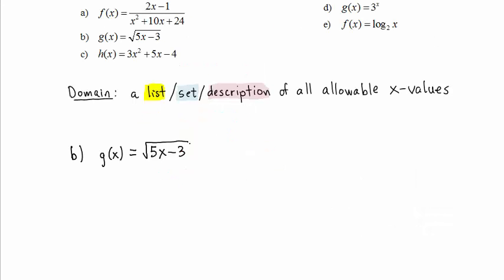In Part B, we have g of x equals the square root of 5x minus 3. What is the domain of g? The principle here is that the quantity of which you are taking the square root, 5x minus 3, that must be greater than or equal to 0.